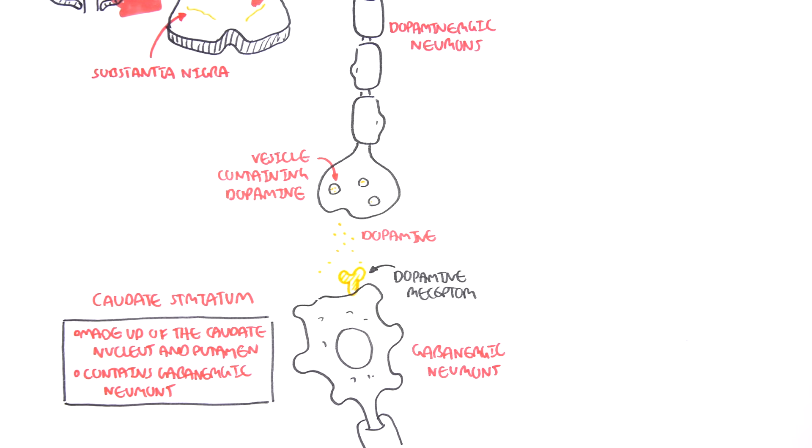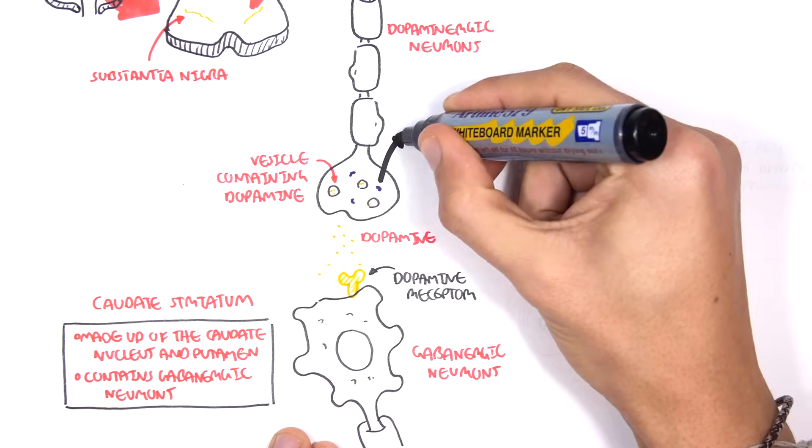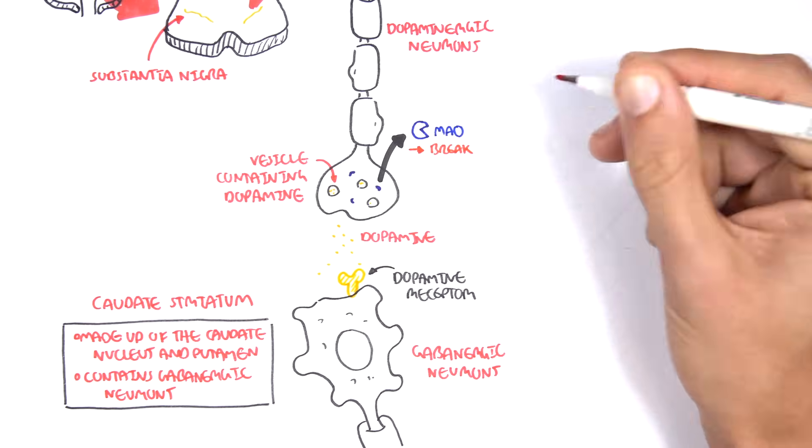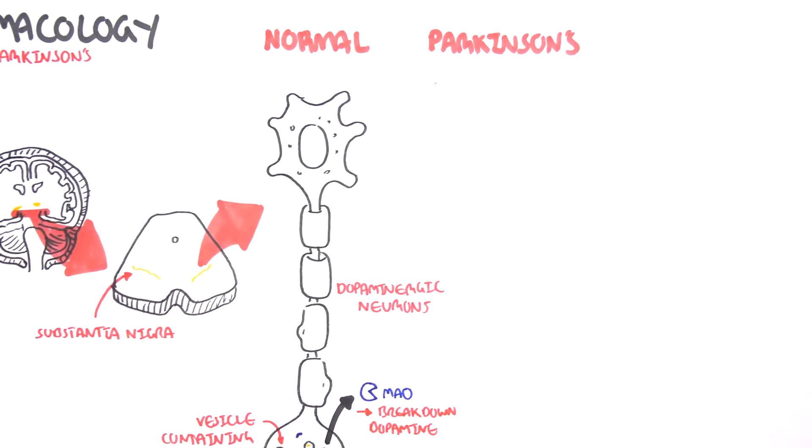When dopamine is released, it binds onto these dopamine receptors and either stimulates or inhibits the gabanergic neurons. Within the dopaminergic neurons here, we have an enzyme, monoamine oxidase, and these guys essentially break down the dopamine after it's been used. It helps in the recycling process.